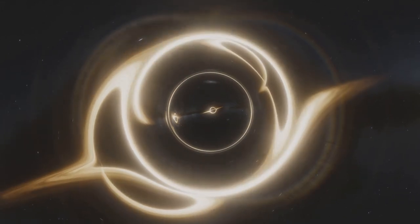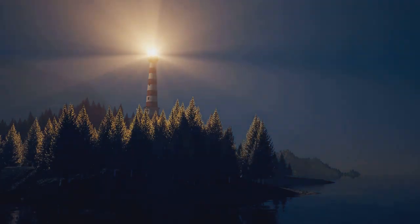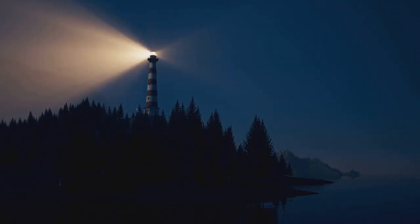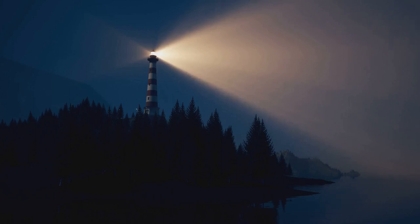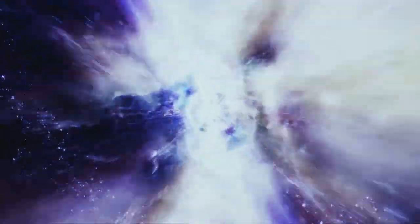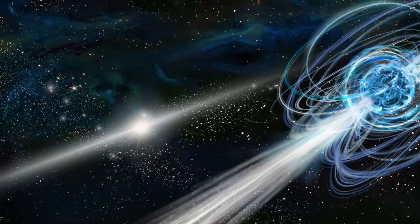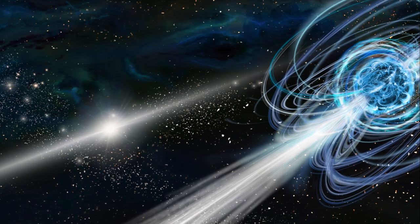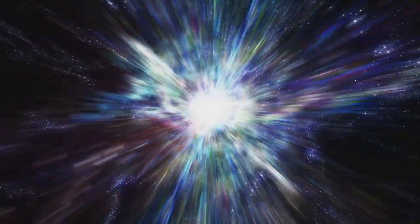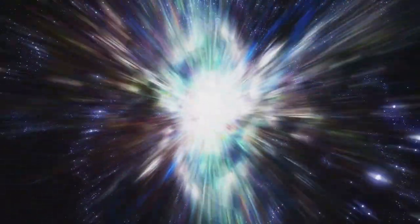These celestial lighthouses emit across the electromagnetic spectrum, from radio waves to gamma rays. Each burst of radiation, each pulse of energy, carries valuable information about the magnetar's properties, its environment, and the nature of the universe itself. One way magnetars act as cosmic beacons is through their intense x-ray emissions. These emissions, originating from the superheated surface of the magnetar, can fluctuate dramatically, revealing clues about the star's rotation, its magnetic field structure, and the processes occurring in its interior.